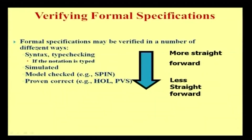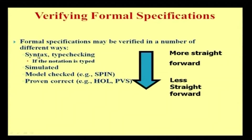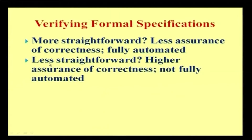Verifying formal specifications — formal specifications may be verified in a number of different ways. For example, checking for syntax or typo errors when notation is not typed correctly, going for a simulated environment to point out defects, model checking, or theorem proving where a benchmark has already been developed. A more straightforward approach such as syntax checking offers less assurance of correctness and is fully automated, whereas the less straightforward approach of theorem proving offers higher assurance of correctness but is not fully automated.